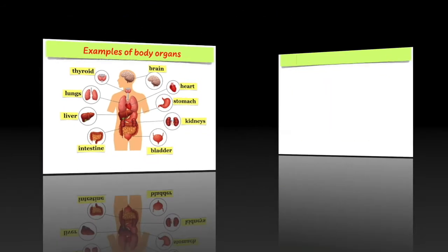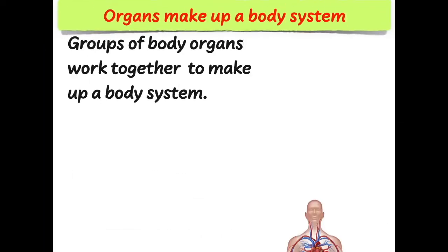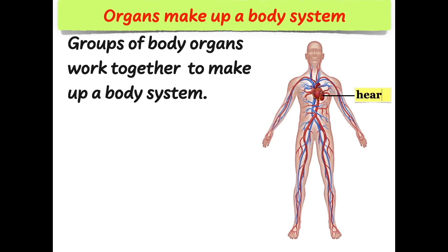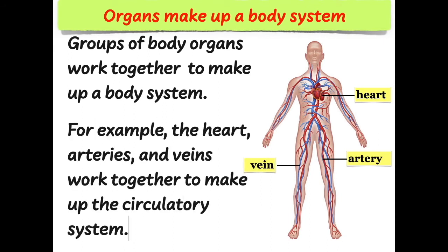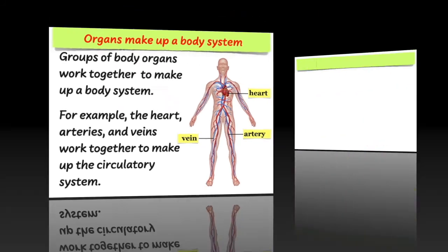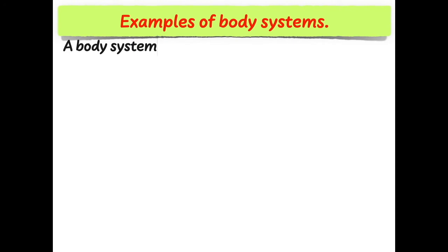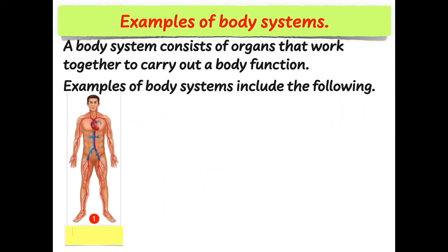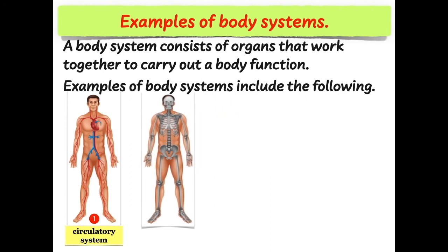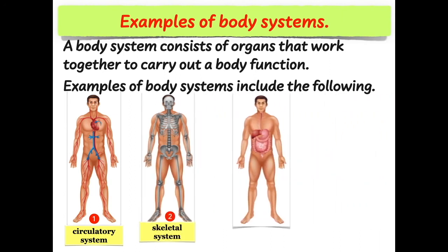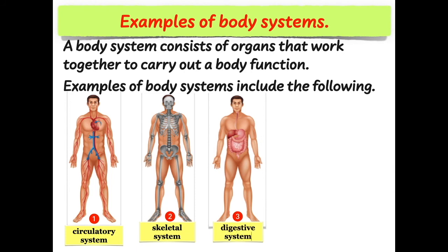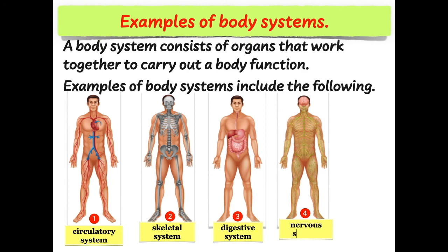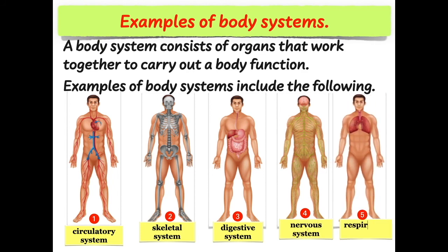Groups of body organs work together to make up a body system. For example, the heart, arteries, and veins work together to make up the circulatory system. Examples of body systems include: the circulatory system, the skeletal system, the digestive system, and the nervous system.